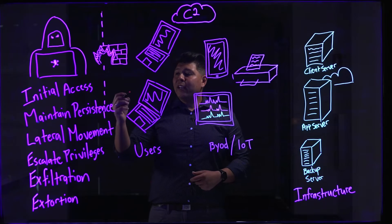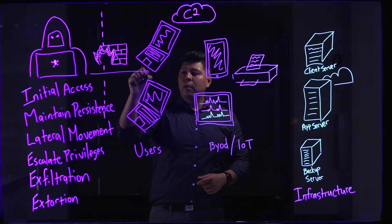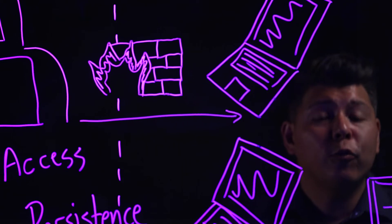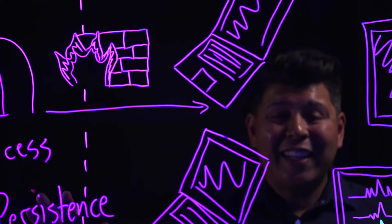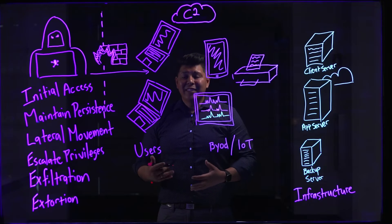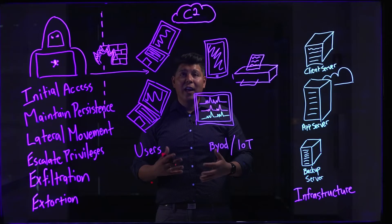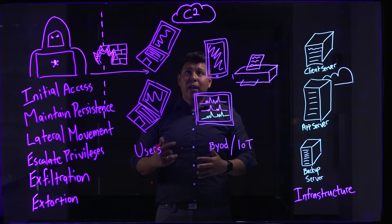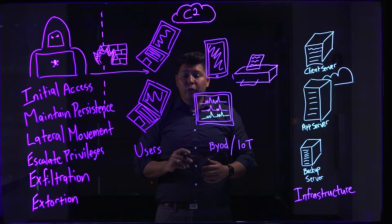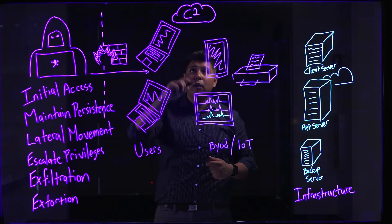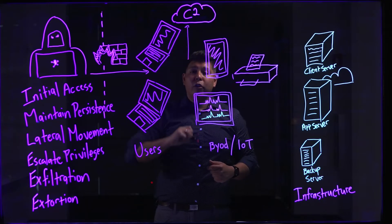Once they get initial access — maybe they've gained user access to one of the machines on your network — what do they do from there? They need to maintain persistence. Maintaining persistence really involves downloading and installing the tools they are going to use to operationalize their attack activity. They might do that by downloading tools from a command and control server, or C2 server, out on the web.